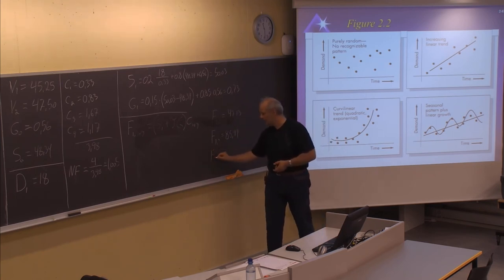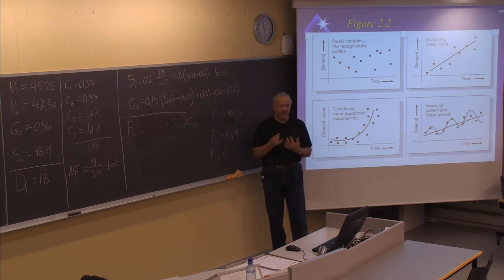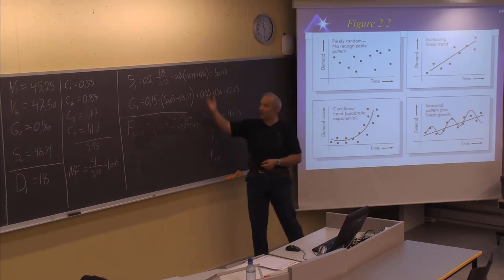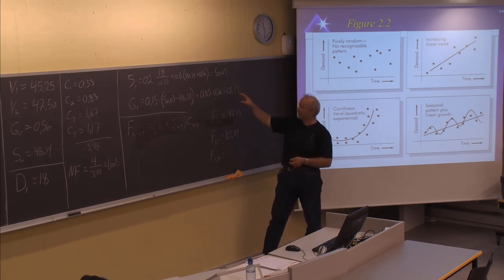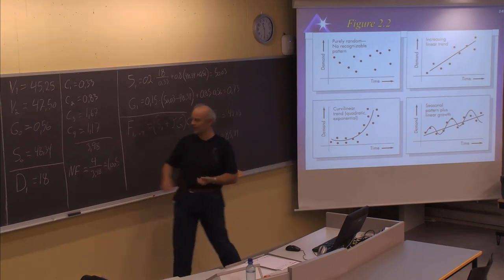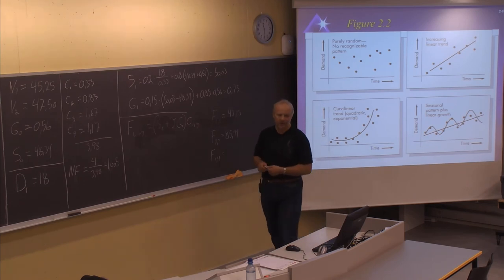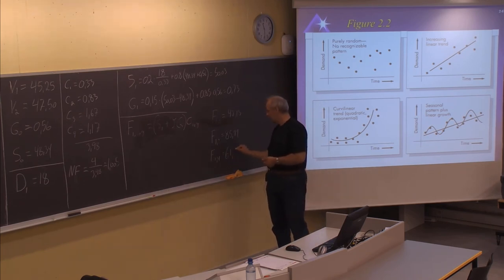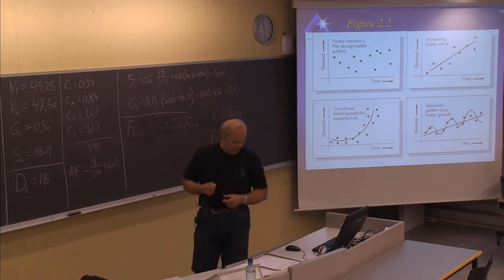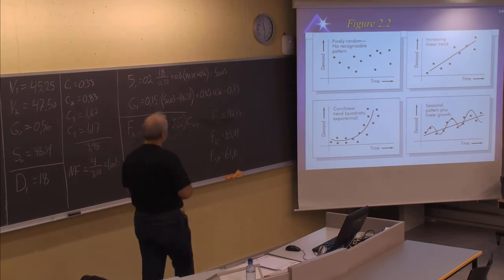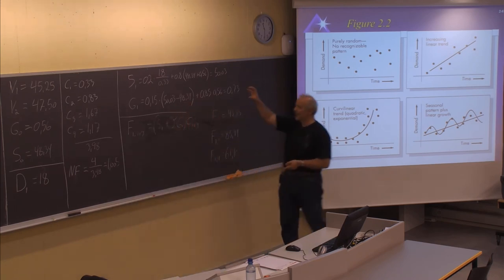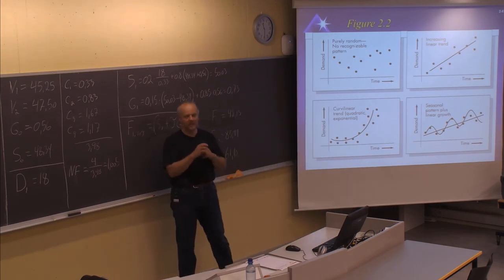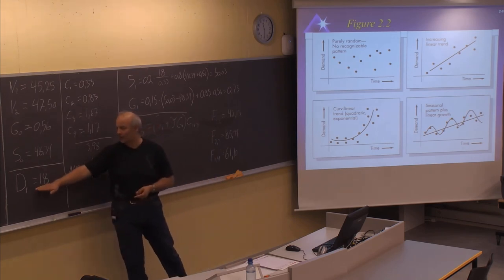Similarly for period 4, we are still in the same period. We have no more data, so we cannot update S and G values and use the same values: 50.03 plus 3 times the gradient of 0.73, then multiplying the sum by 1.17, which is the current seasonal factor, giving a total of 61.10.